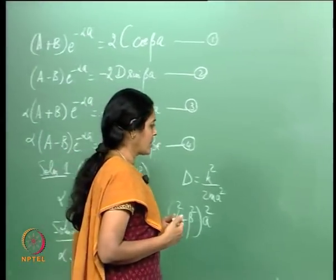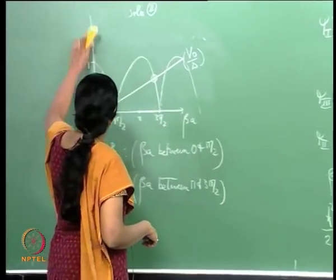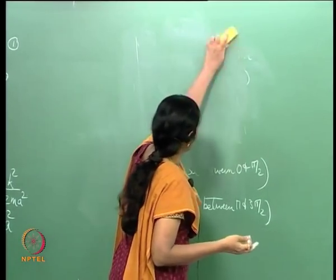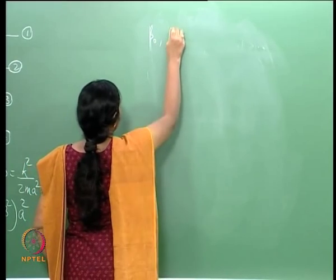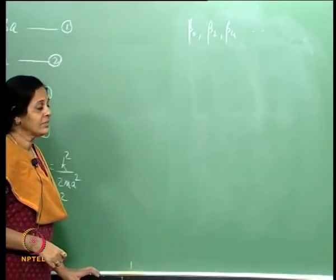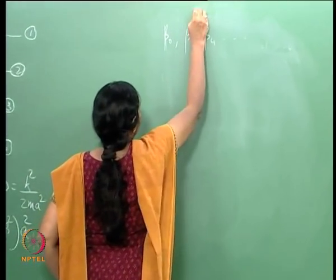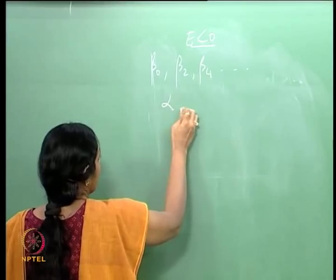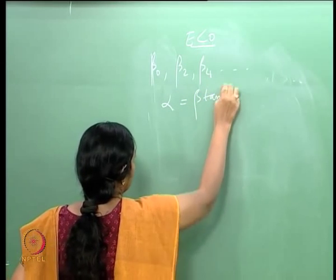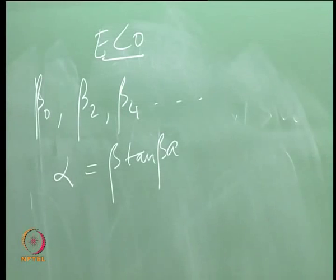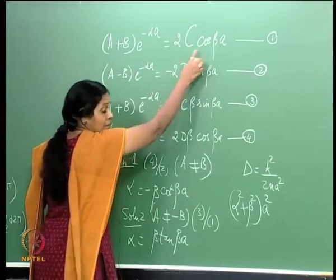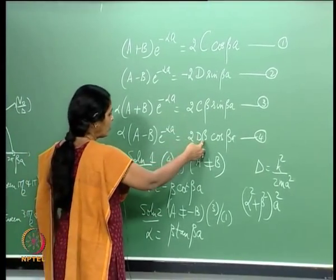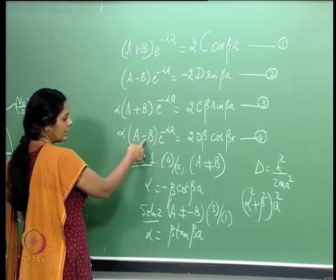Let us now look at the energy eigenfunctions. We will take up Solution 2 first. Recall that Solution 2 gave us beta_0, beta_2, beta_4 and so on, for E less than 0, corresponding to alpha = beta tan(beta a). I had obtained this by dividing equation 3 by equation 1.